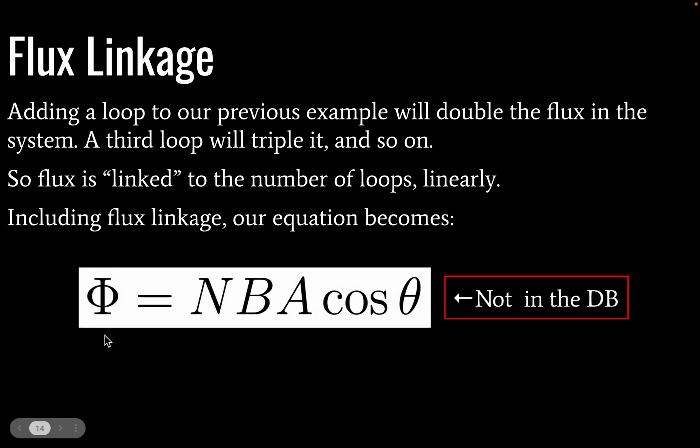And if we include the number of loops in our equation, we get this, where phi is equal to N B A cosine of theta. This is not in a data booklet, at least not directly, although we will see it appear kind of indirectly.